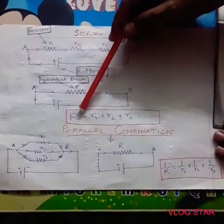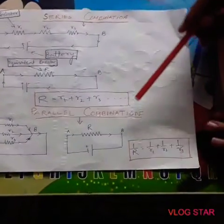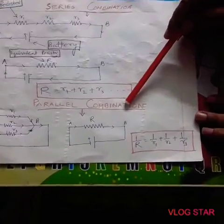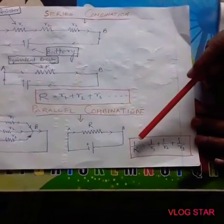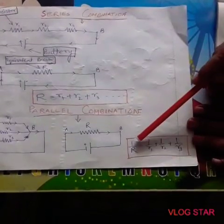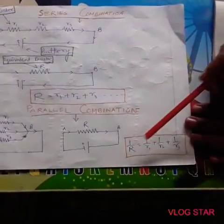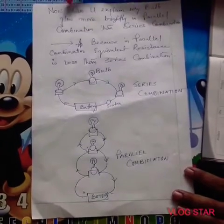But in case of parallel combination, the formula of equivalent resistance is quite different: one by R equals one by R1 plus one by R2 plus one by R3.